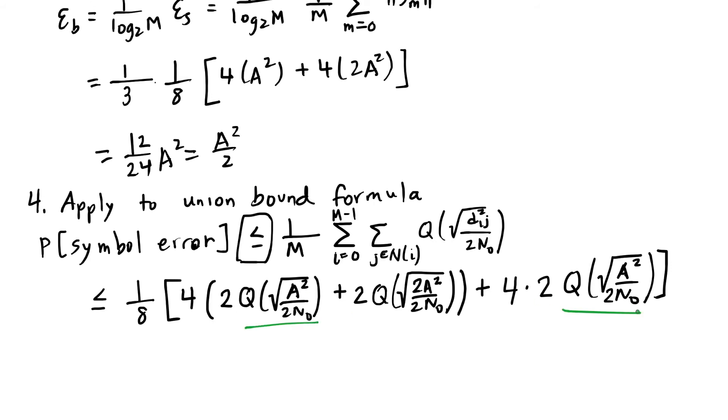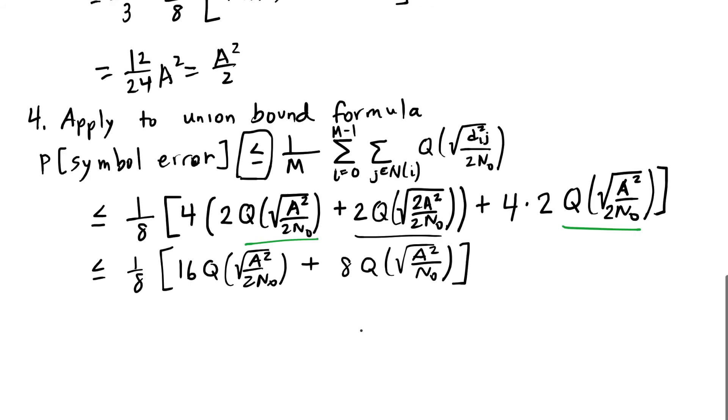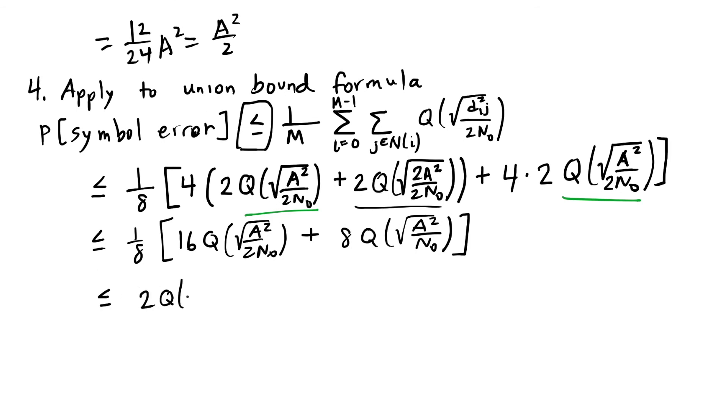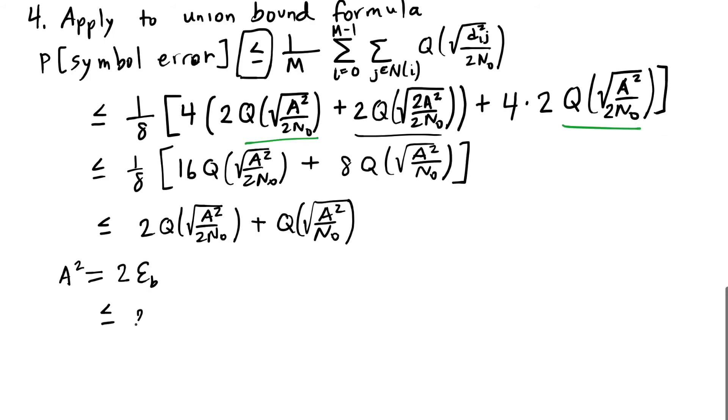Overall, I have these two very similar terms, the Q functions where there's a square root of a squared divided by 2n0 in them. And I'm going to group those together. And I'll group together the other terms. And the 8 and the 16 make 2, and the 8s cancel on the second term, and I get just the Q function. And there's still a function of a squared, but as we showed, a squared is equal to 2 times Eb.